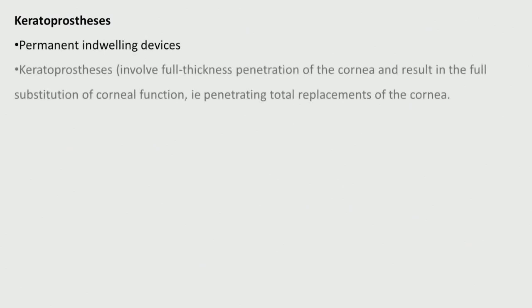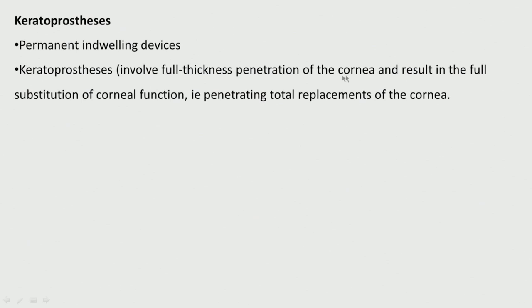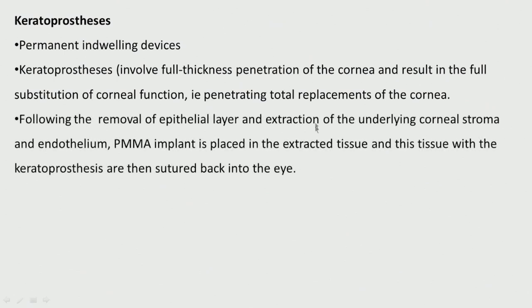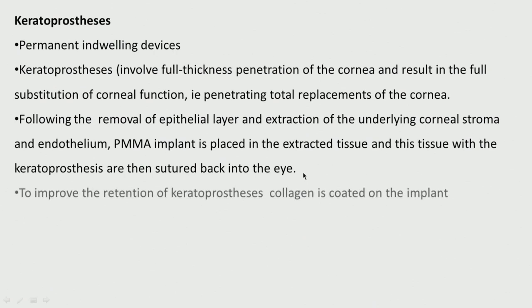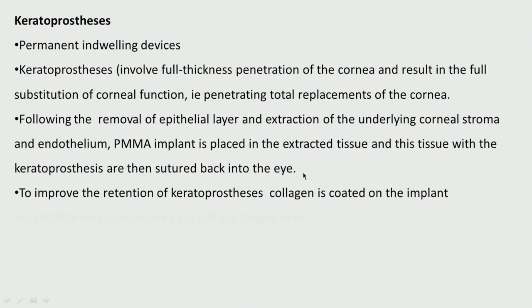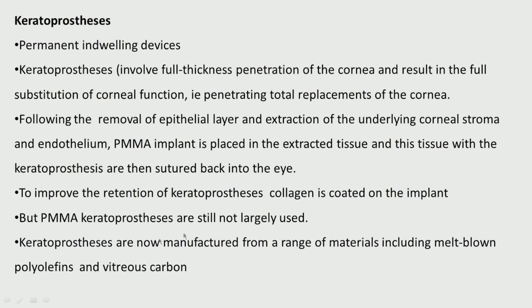Keratoprosthesis is a permanent indwelling device involving full-thickness penetration of the cornea, resulting in full substitution of the corneal function — essentially a penetrating total replacement of the cornea. Following removal of the epithelial layer and extraction of the underlying corneal stroma and endothelium, a PMMA implant is placed in the extracted tissue, and this tissue with the keratoprosthesis is then sutured back into the eye. Collagen is coated on the implant to improve retention. PMMA keratoprostheses are not yet widely used; they are now being made from polyolefins and vitreous carbon as well.